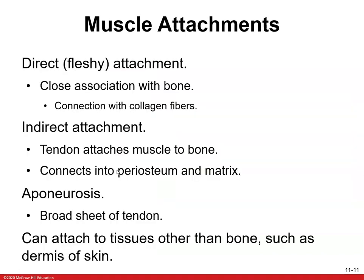Muscle attachments: you have direct fleshy attachment — a close association with bone, connected with collagen fibers. You have indirect attachments — that's your tendon, which attaches muscle to bone and connects to the periosteum and the matrix. Sometimes you have an aponeurosis, which is a broad sheet of tendon — like your palmaris longus has a palmar aponeurosis. It can also attach tissues other than bones, such as the dermis of the skin, since sometimes you have muscles that attach just to the skin.